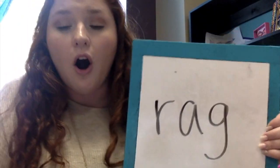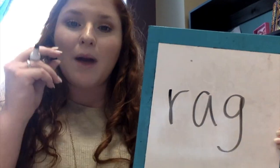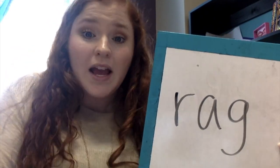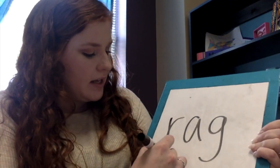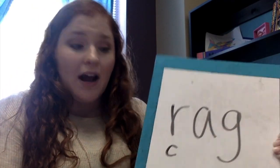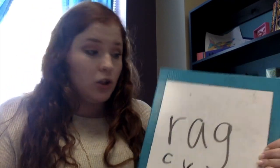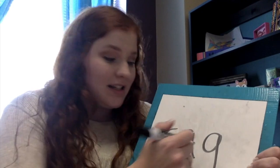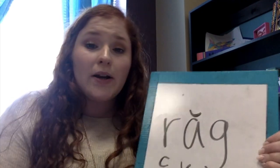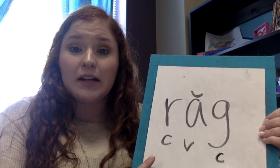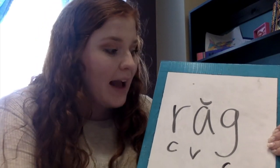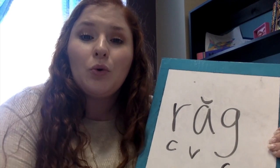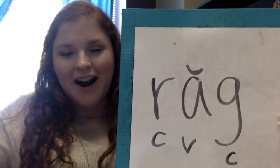Let's look at another word. I know R says R and my mouth starts to close — my teeth are getting in the way — so the sound is partially blocked and I know it's a consonant. In the middle we have a vowel. It is followed by a consonant and there's no other vowel at the end, so I know that A has to be a short vowel, saying A. We sound it out: R-A-G, R-A-G. The word is rag. Awesome job.